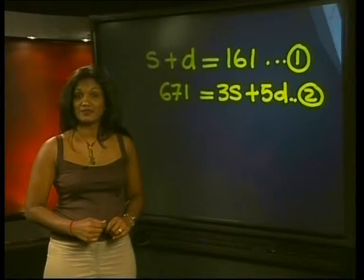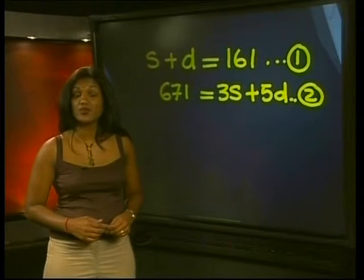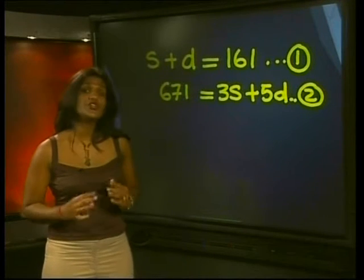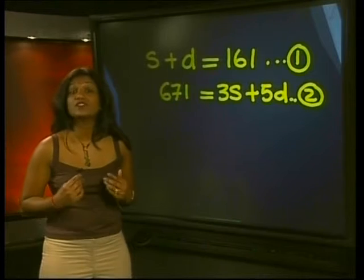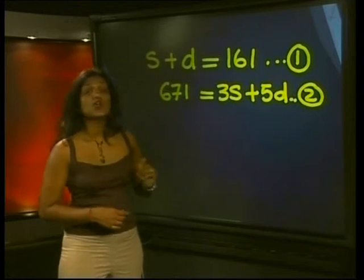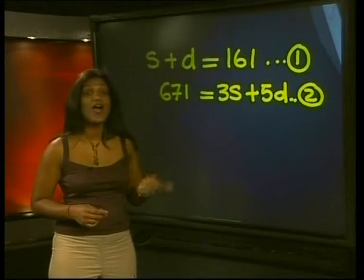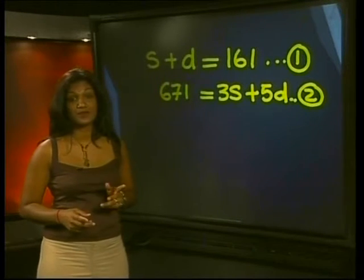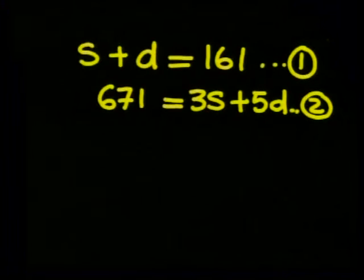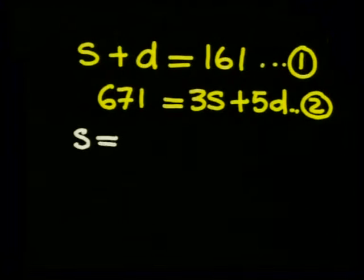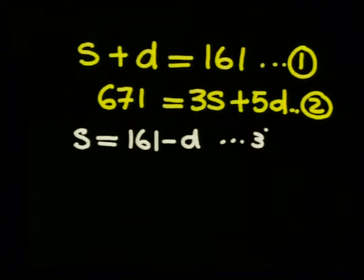Now the rest is easy. We just solve the simultaneous equations that we set up. Now you could use elimination or substitution. In equation 1 we have a coefficient of 1 for S and D. So solving for either unknown in this equation is simple. So I will use substitution. From equation 1 we get that S is equal to 161 minus D and I'll call this equation 3. So we can substitute equation 3 into equation 2.